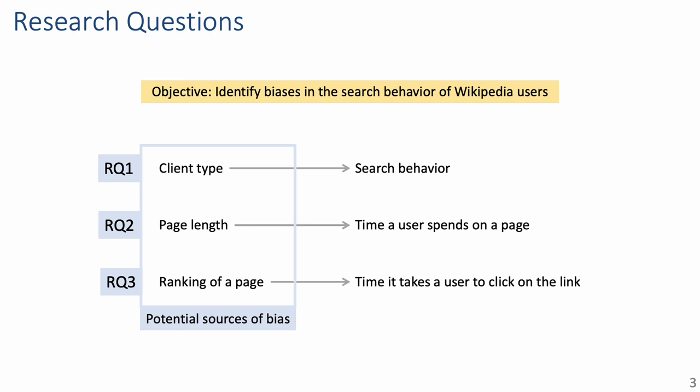We guide the study by three research questions: namely whether the client type affects the observed search behavior, whether the page length affects the time a user spends reading a page, and finally whether the ranking of a page affects the time it takes a user to click on the link to it, which is also known as time to first click.